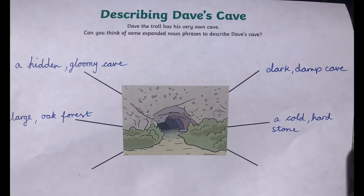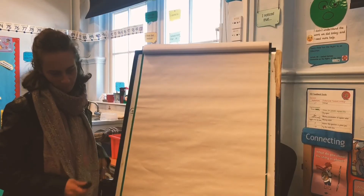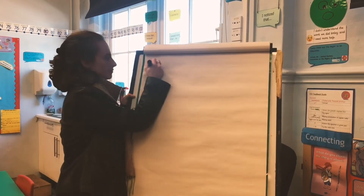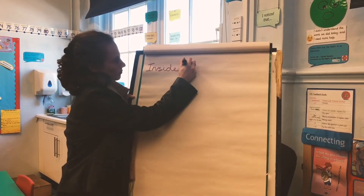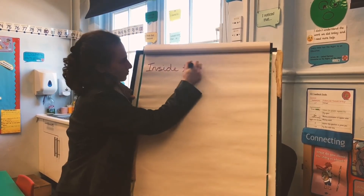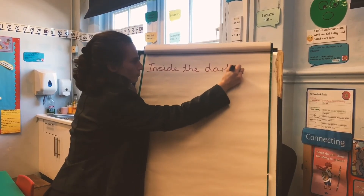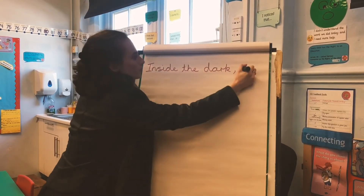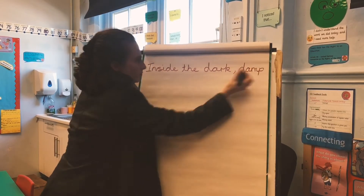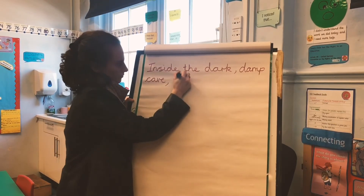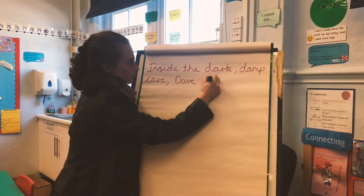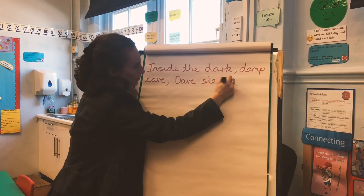Now I've decided I'm going to move on and describe the inside of the cave as 'dark, damp,' and he's going to be sleeping on 'a cold, hard stone,' because that's what my troll likes to do. Maybe yours will be different, but those are my choices of adjectives in my expanded noun phrases.